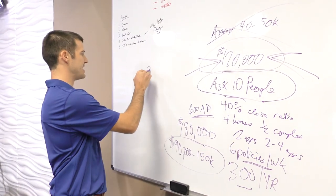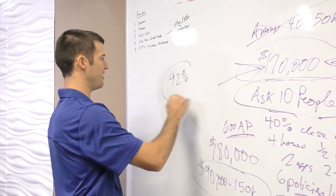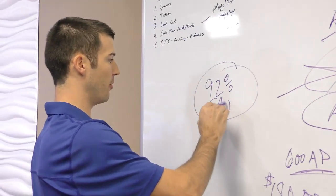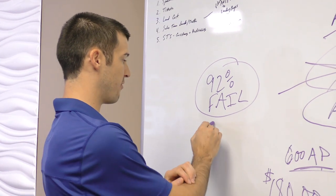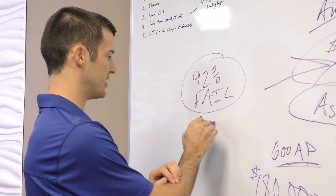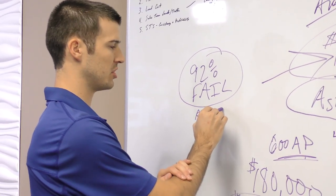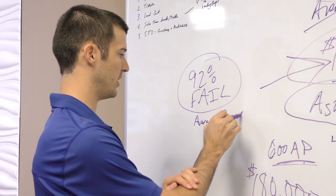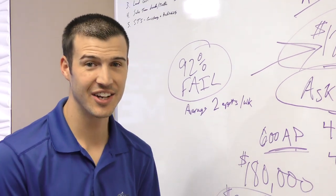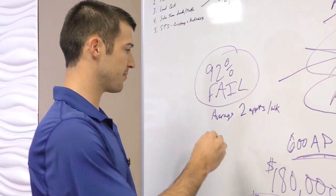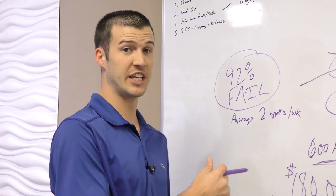The reason why 92% of insurance agents fail is simply because they're average. You know what the average agent does? They run about two appointments a week. Two appointments a week, dude.